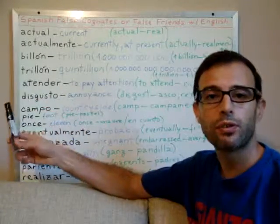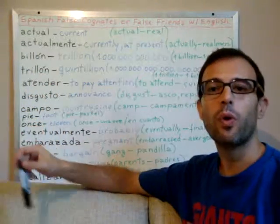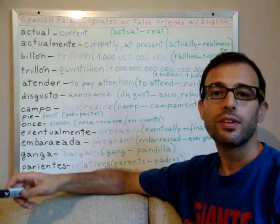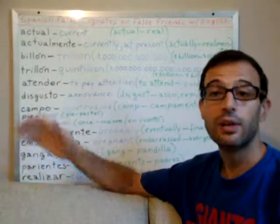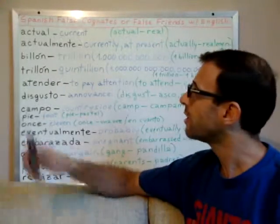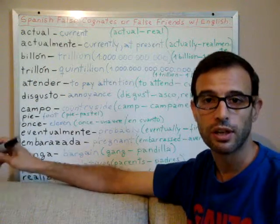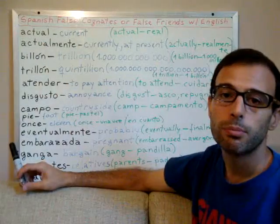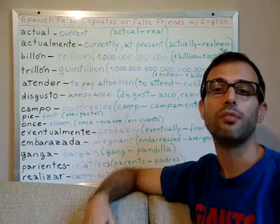False cognates or false friends are those words that when you read them, they are almost identical to words in English. So intuitively people can translate them into the word they look like in English, but they mean something different. They are very confusing, and some of these words are very, very common in the language. We will see some of the most used ones, although the list has hundreds of false friends.